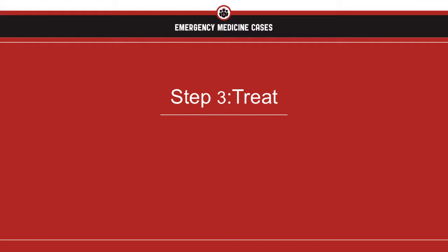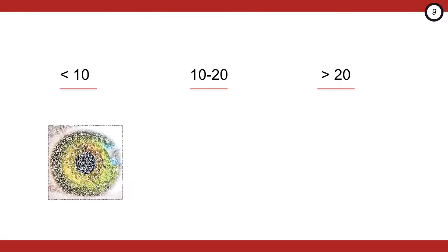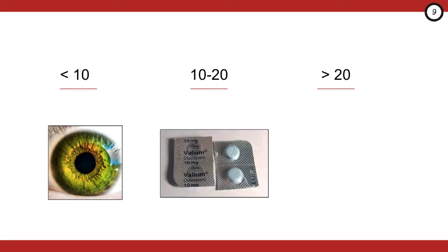This moves us to step three — a very important step. Get on top of the withdrawal early. We want to ensure that patients are fully treated before leaving our department. Treatment depends on the CIWA score. If less than 10, generally no treatment is needed — just observe to ensure they don't get worse. Between 10 and 20, they require treatment in the form of benzodiazepines, mainly diazepam. Reserve lorazepam for patients with liver disease such as cirrhosis or obvious stigmata like ascites or jaundice. Give 5 to 10 milligrams of oral diazepam, monitor for response, and they may require repeat doses.